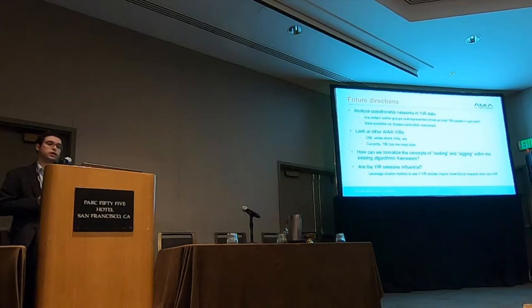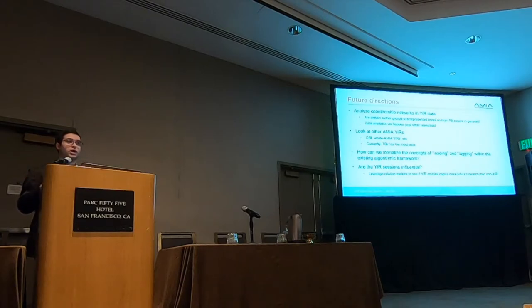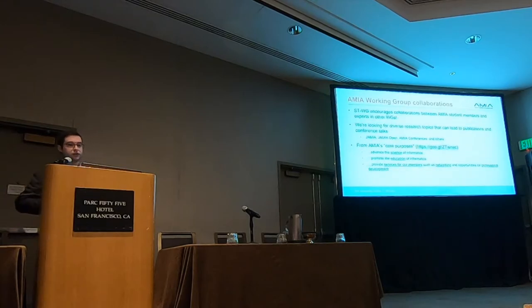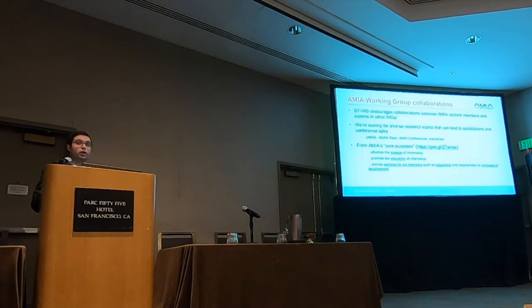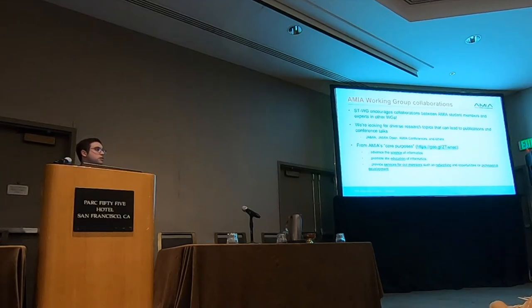Moving on quickly to future directions: we want to analyze co-author networks in the Year-in-Review data to see if certain author groups are overrepresented — we have this data available from the Scopus API. We also want to look at other AMIA Year-in-Reviews and formalize the concepts of leading and lagging within the existing algorithmic framework. Finally, we want to determine whether the Year-in-Review sessions themselves are influential. The authors of this paper consisted of many AMIA student members and one faculty member from the translational bioinformatics and genomics working group, and we're trying to find other collaborations between AMIA student members and experts in other working groups.